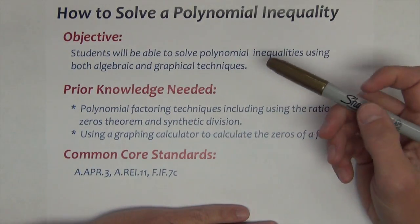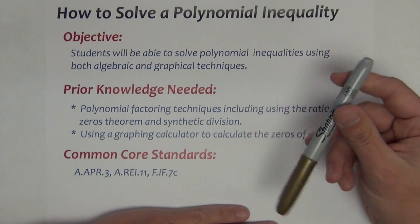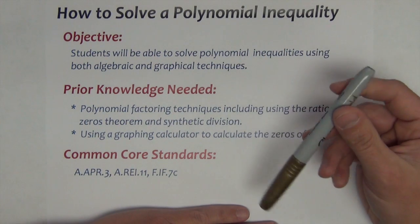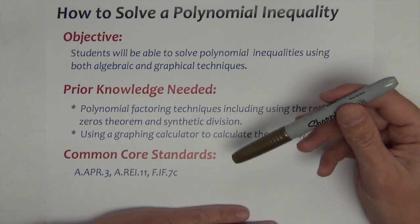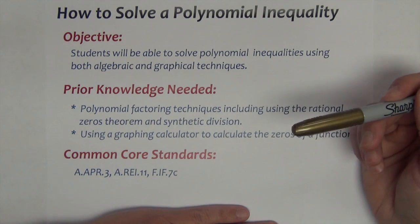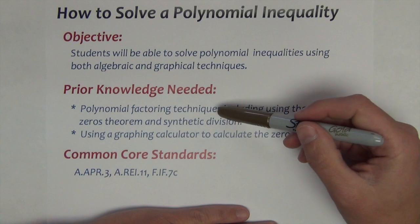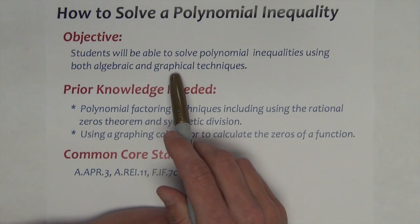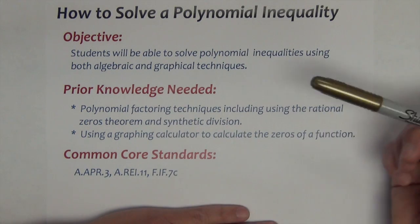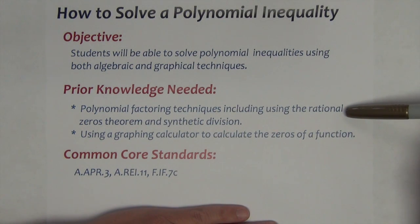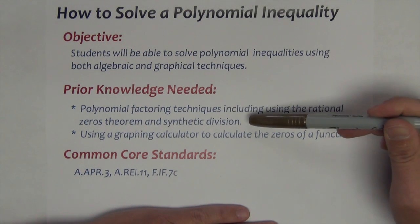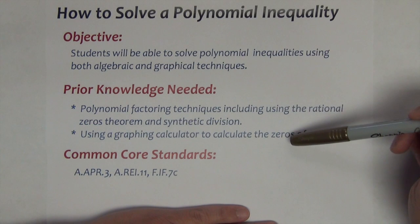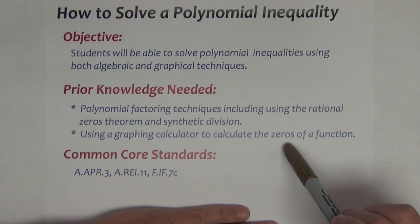In this lesson titled 'How to Solve a Polynomial Inequality,' we're going to go over the type of problems used to mathematically model and solve our open box problem. We're going to solve two types of polynomial inequalities: one that can be solved algebraically using factoring techniques and number lines, and one that can be solved graphically using graphing calculators and graphical properties of polynomial functions. We'll need polynomial factoring techniques, including the rational zeros theorem and synthetic division, and how to calculate zeros using the graphing calculator.